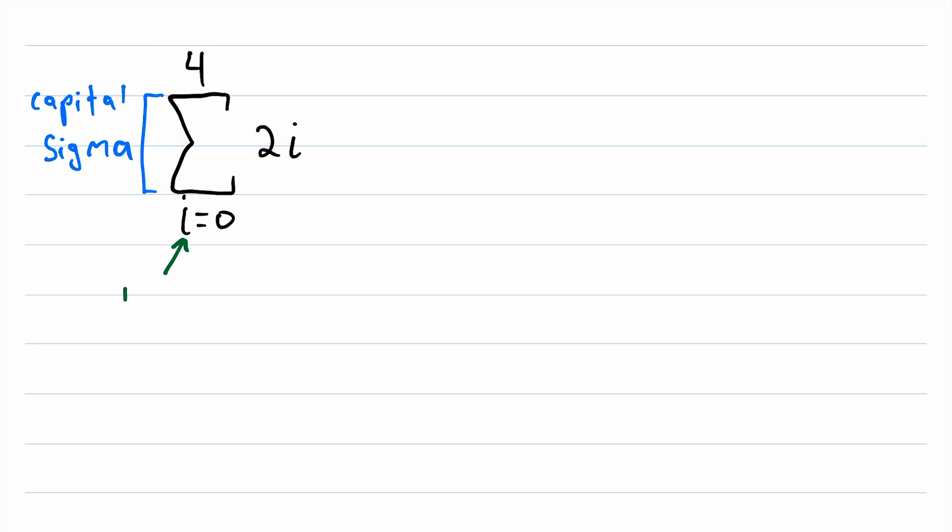This i down here is what's called the index, or the index of summation. This is a part of the sum that changes as we continue to add things together. This i equals zero down here tells us the starting value for the index, so we'll call it the starting point. So i starts at zero. Then this four above the sigma tells us the final value for the index. So this is the stopping point.